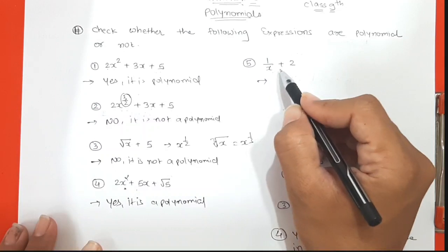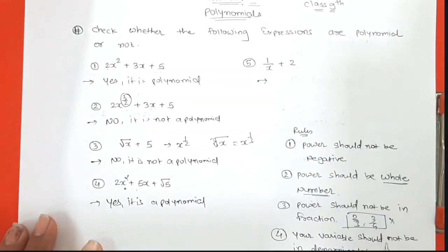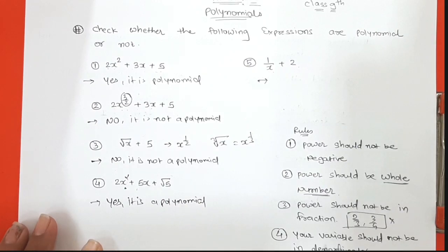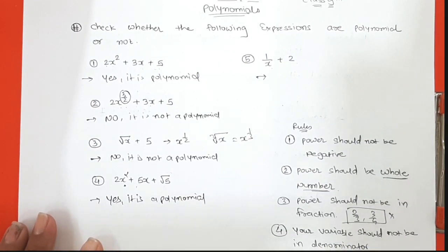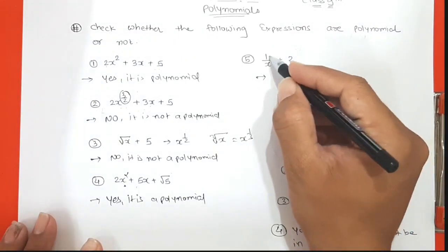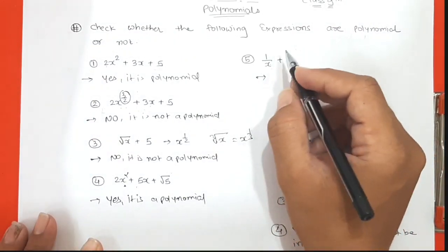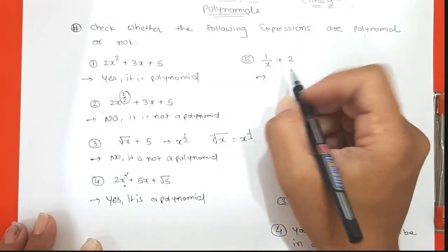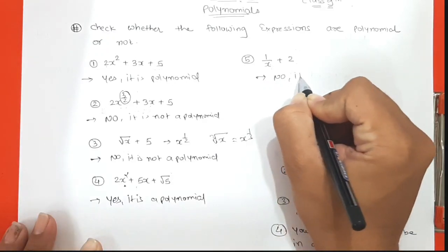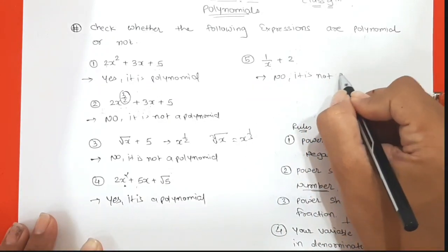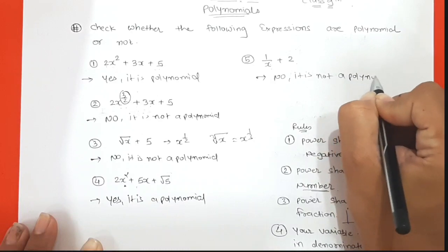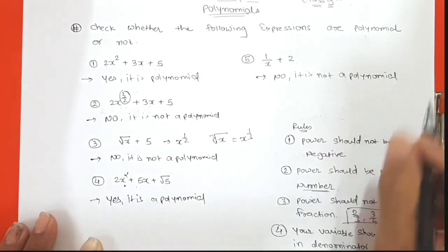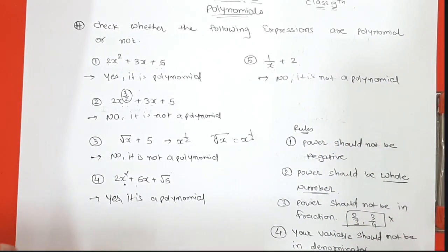The fifth expression is 1 upon x plus 2. Here the variable x is in the denominator. Rule number 4 says the variable should not be in the denominator. We can rewrite this as x raised to minus 1, meaning the power becomes negative. So this is not a polynomial.